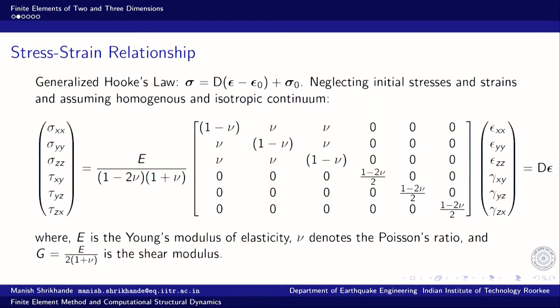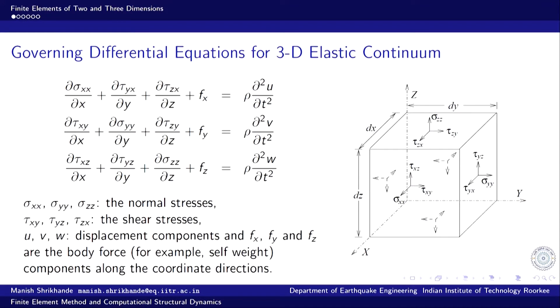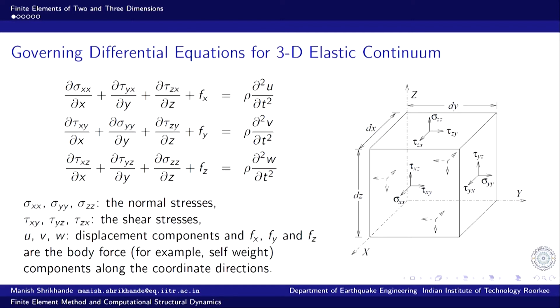To begin our discussion towards finite element formulation, let us look at how the stresses in the governing differential equation are related to the deformations produced in the body. We make use of the generalized Hooke's law: stress is proportional to strain, defined by sigma = D(epsilon - epsilon_0) + sigma_0, where D is the constitutive matrix of elastic constants such as Young's modulus, Poisson's ratio, or Lamé's constants.